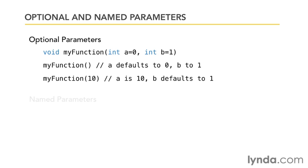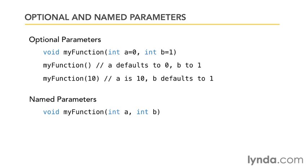The other feature is named parameters. Up until C# 3.0, you had to call parameters in the order in which they were declared in the function declaration. Named parameters, however, change that. Suppose I have a function with two integer arguments, one named A and one named B. I can call the function by passing in the name of the parameter, a colon, and then the value. So if I wanted to call this function with parameters out of order, I would simply say B colon 5 and A colon 3, and this would call the function normally.